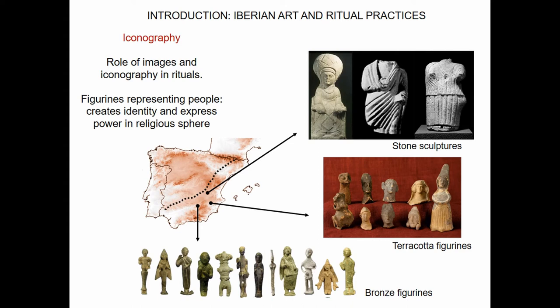One important thing is that these motifs, when they acquire a personal aspect, are constructed differently according to regional traditions. For example, in higher Andalusia, in the upper Guadalquivir valley, the most frequent offerings in the most important sanctuaries are bronze figurines. In the inland Meseta, in the area of Albacete, one of the larger sanctuaries was using stone sculptures. And on the Mediterranean coast — the case study I am going to present — terracotta figurines are very frequent. Most scholars understand this use of terracotta through cultural influences of the Punic world, as they are dated to a moment when Punic-Carthaginian influence was very strong in the southern Mediterranean.